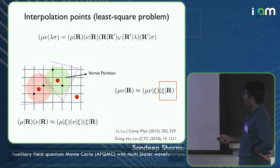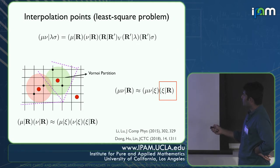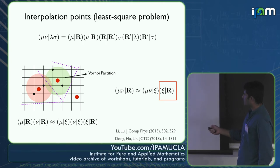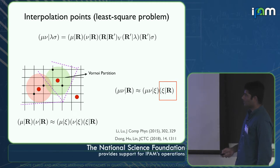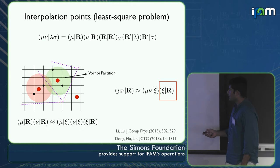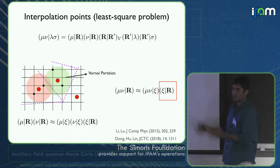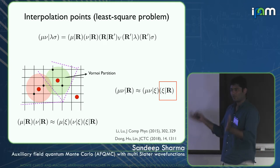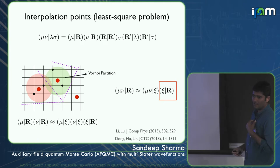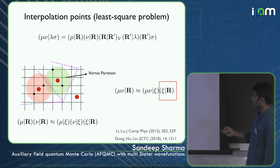Once you have the special grid points, you find numerical orbitals ξ(r) such that their product approximates the product of Gaussian orbitals at all grid points. This is a least-squares problem that can be solved. It's technically O(N³), but with a small pre-factor, so it doesn't dominate the algorithm.